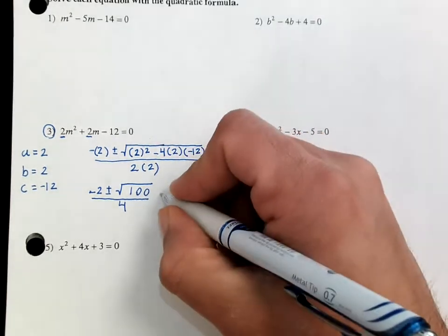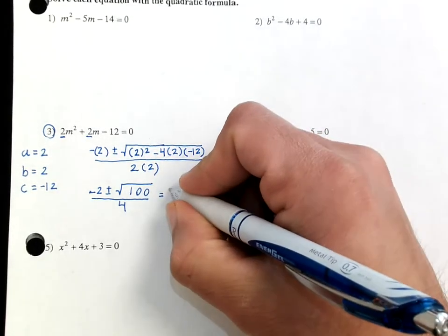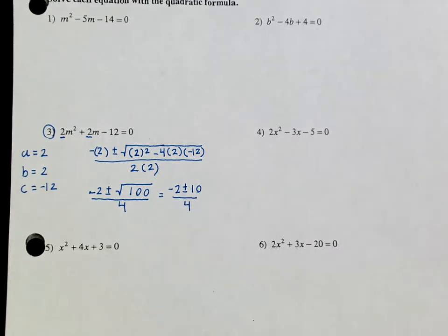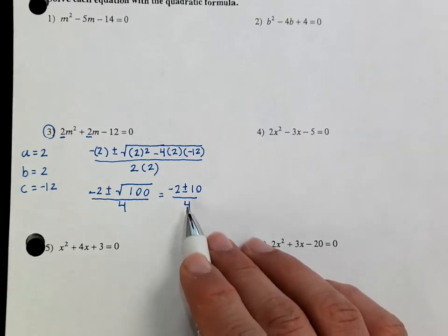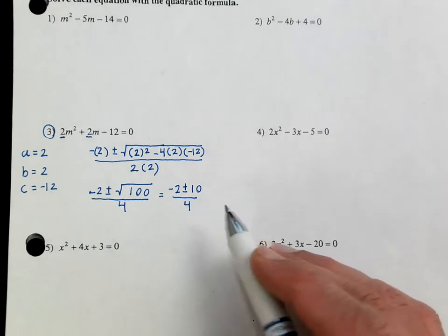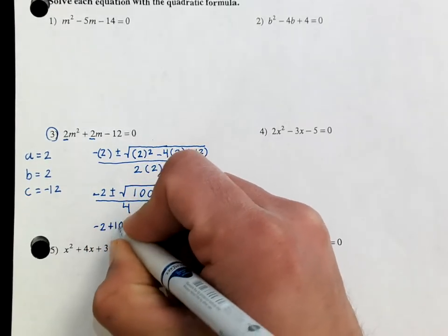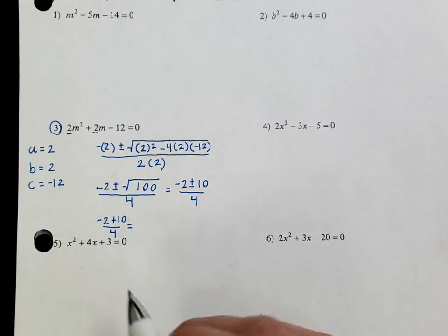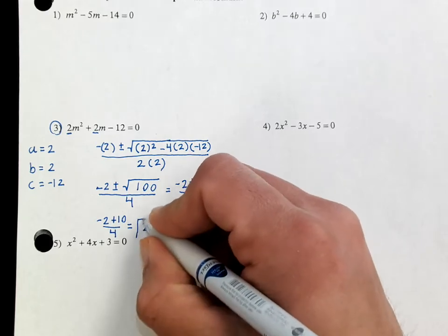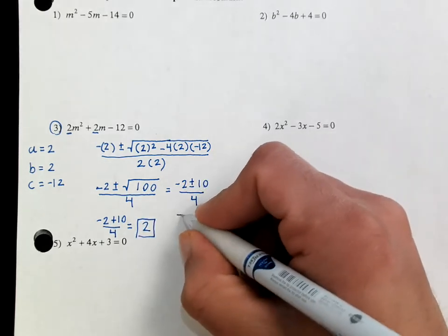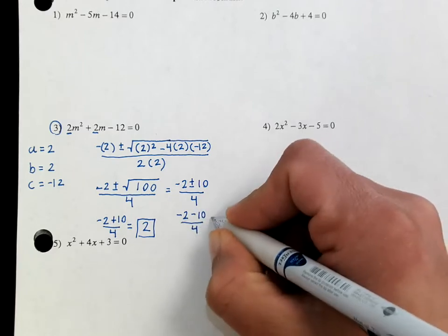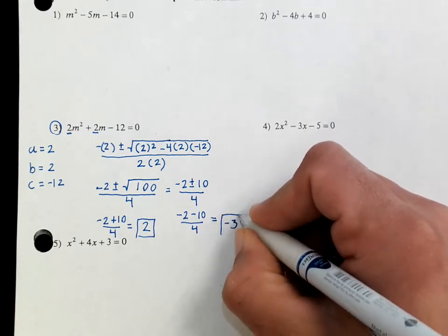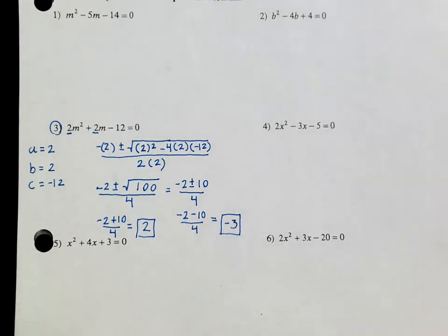So this is going to be equal to negative 2 plus or minus 10 over 4. Remember that when you have something like this you get 2 answers. You're going to get one that says negative 2 plus 10 over 4 — and if you have negative 2 plus 10 that's 8, and 8 divided by 4 is 2, so that's one answer. The other answer would be negative 2 minus 10 over 4, which gives you negative 12 over 4, making this negative 3. So again, you just found where the x-intercepts of the function are.